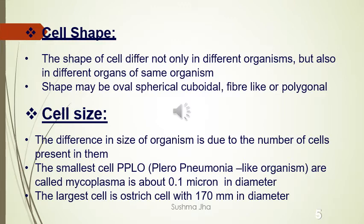Now the size of the cell differs in different organisms. The smallest known cell is PPLO — pleuroneumonia-like organism, also known as mycoplasma. It is about 0.1 micron in diameter; micron means 10 to the power minus 6 meter. The largest known cell is the ostrich egg, which is 170 millimeters in diameter.